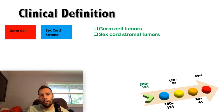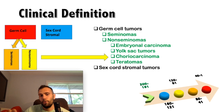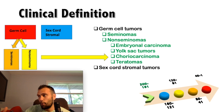Let's start our discussion of testicular tumors with some basic definitions. Testicular malignancy can be divided into germ cell tumors and sex cord stromal tumors. Germ cell tumors make up about 95% of cases and tend to be malignant, while sex cord stromal tumors tend to be more benign. Germ cell tumors break down into seminomas and non-seminomas. Non-seminomatous tumors include embryonal carcinoma, yolk sac tumors, choriocarcinoma, and teratoma. You can also have mixed germ cell tumors combining different types.